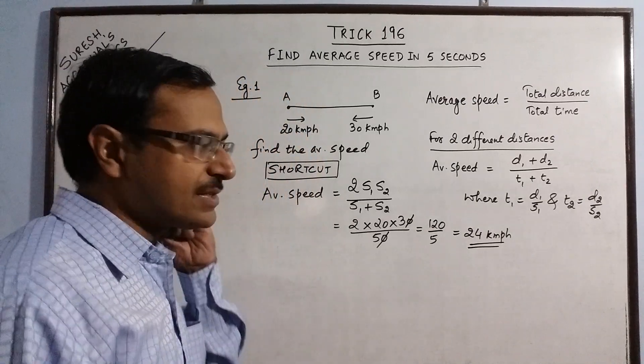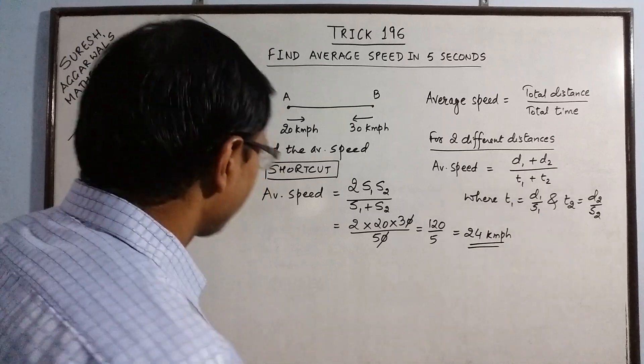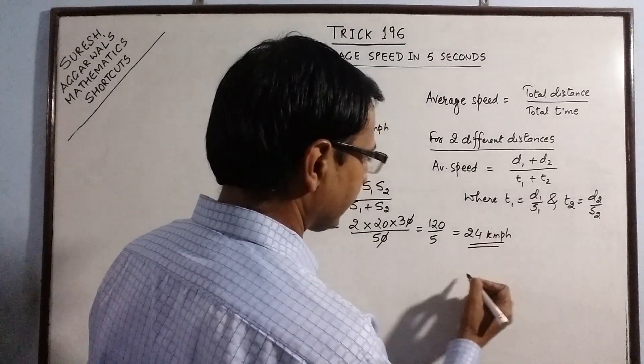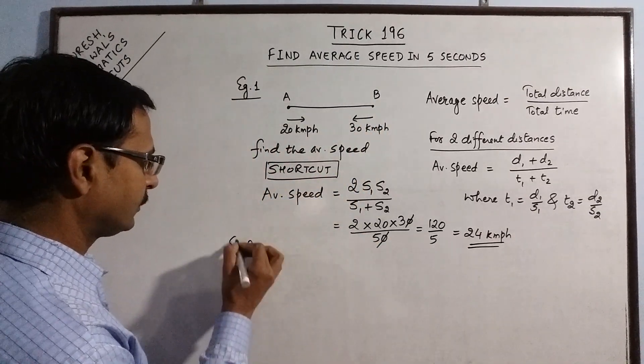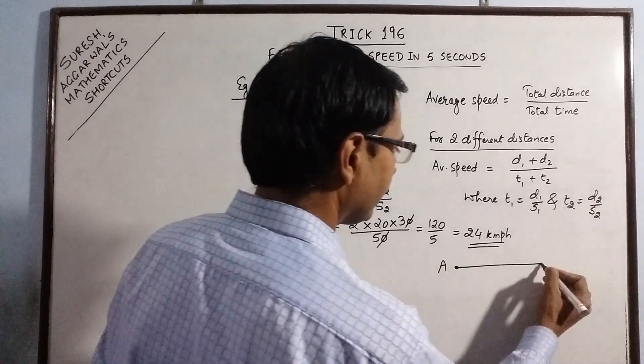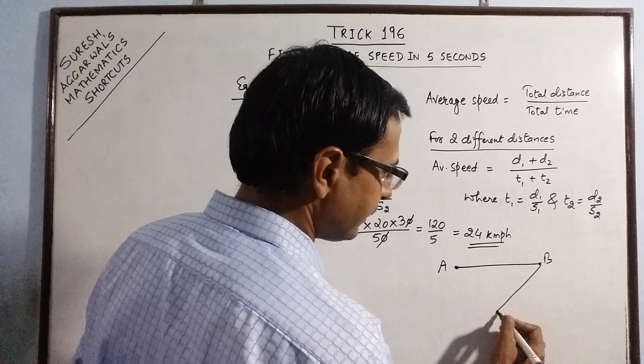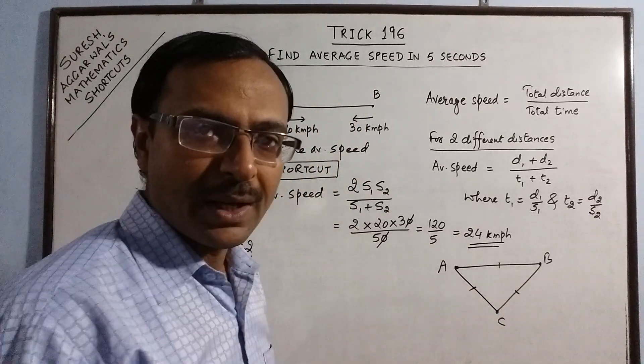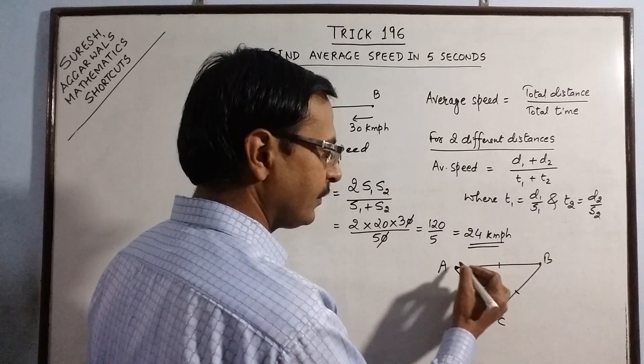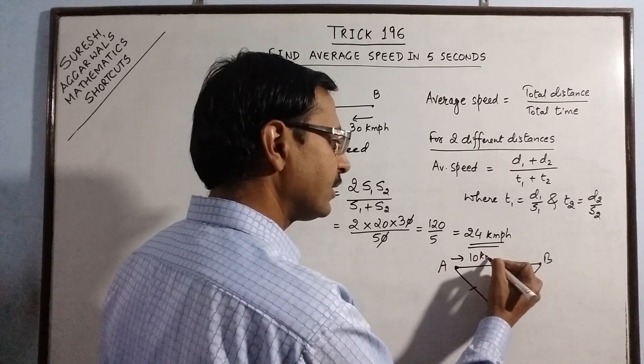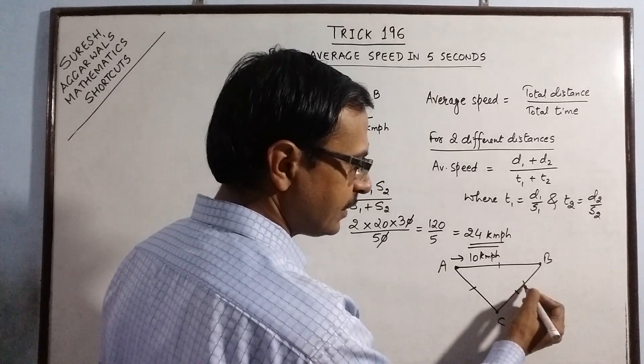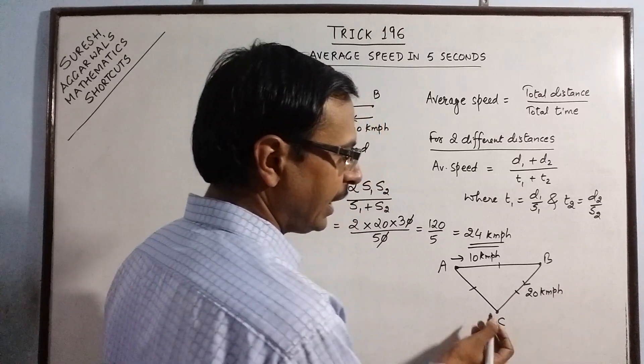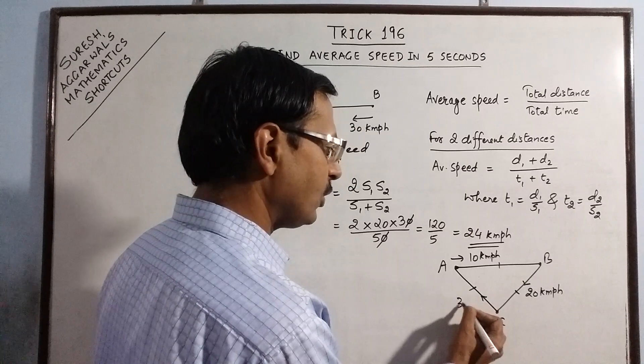Now, let us extrapolate this method for 3 distances. Now, see there are 3 points. I am marking the example 2 here. Now, suppose there are 3 points. Point A, point B and point C. Suppose the 3 distances are equal and a person is travelling from A to B at a speed of 10 km per hour. From B to C at a speed of 20 km per hour. And from C to A at a speed of 30 km per hour.